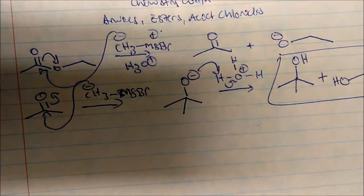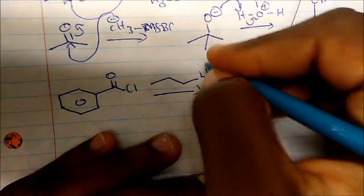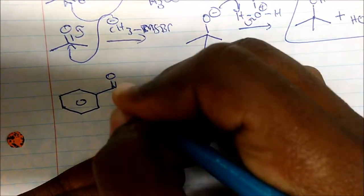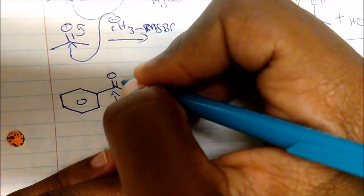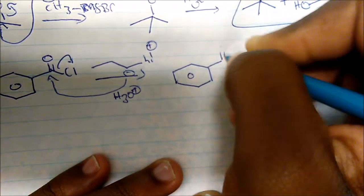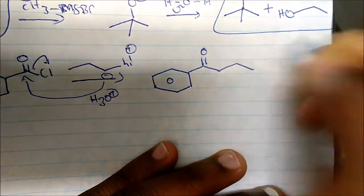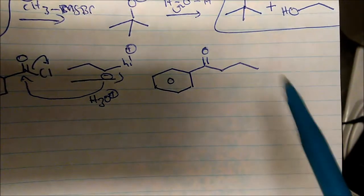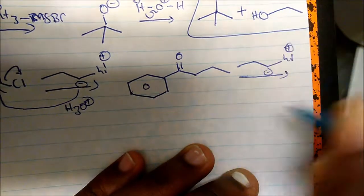Now what about acid chlorides? If I take benzoyl chloride and add an organolithium reagent — remember lithium is positively charged and carbon is negatively charged — it's going to attack the carbon and displace the chlorine in an acid workup. We get a carbonyl structure where the carbon is now bonded to the new carbon group.